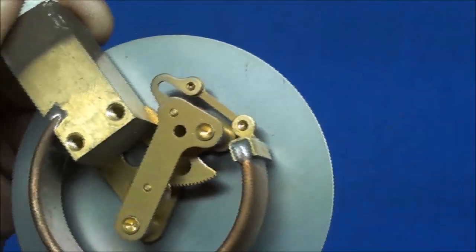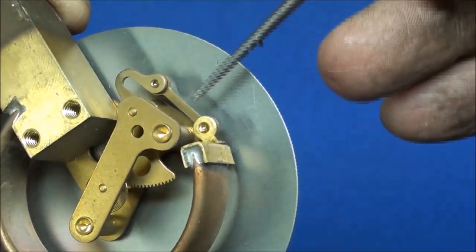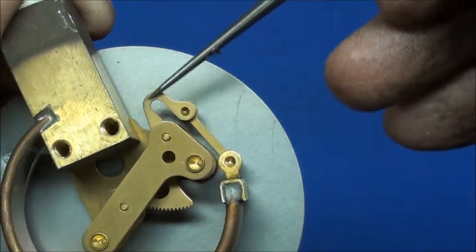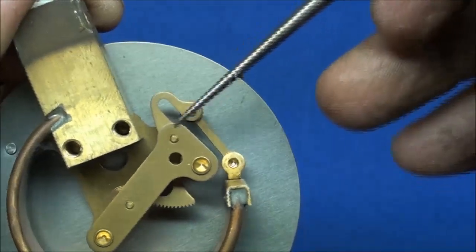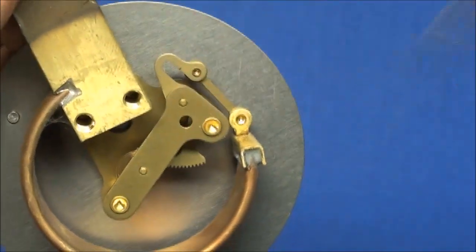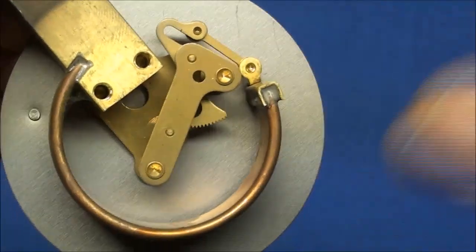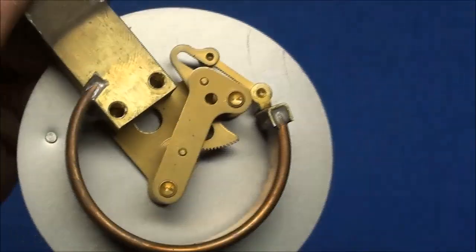Now we've got some linkages here, or some links. There's a link right there, and yet another one here that looks a bit like a loop. Now the reason for the loop, from what I understand, is to allow them at the factory, when they built this, to calibrate it.